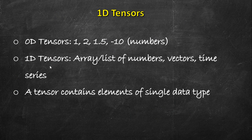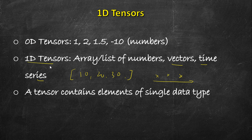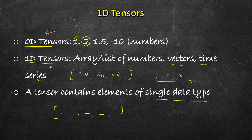1D tensors are an array or list of numbers, vectors, or time series values arranged in a sequence. Just to recap, 0D tensors are just single numbers like 1 or 2. A tensor contains elements of a single data type, so if we have a tensor of type float then all the elements within it will be floats. Mixed types are not allowed.